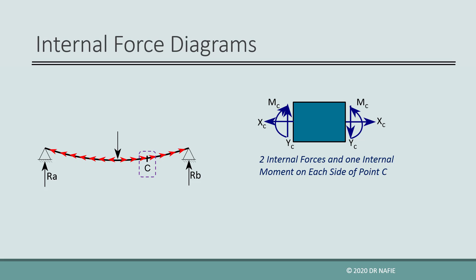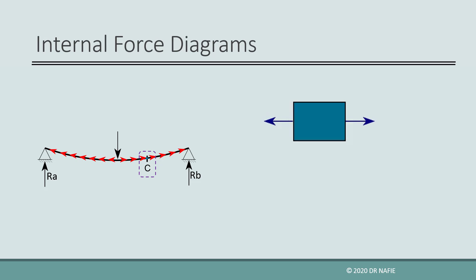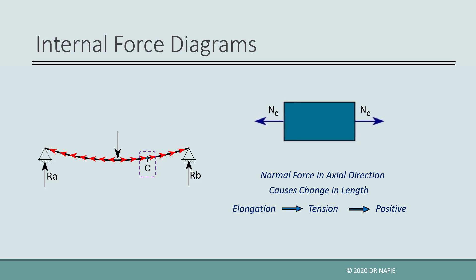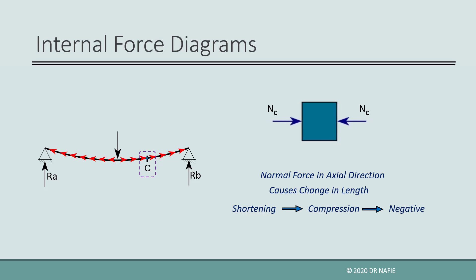The forces on one side should be equal in magnitude and opposite in direction to the forces on the other side to maintain equilibrium of the point. The horizontal internal force acts parallel to the member in the axial direction and is perpendicular to the member cross-section. Therefore, it is called a normal force and is represented by the letter N. The normal force affects the cut piece by changing its length. If the force is directed outwards, it causes elongation and the beam will be in tension at that point, and the normal force is considered positive. If the force direction is reversed, shortening will occur and the normal force will be compression, considered negative.